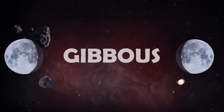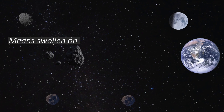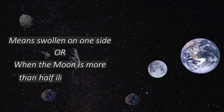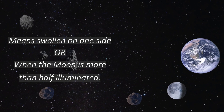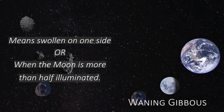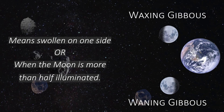Gibbous means swollen on one side, or when the moon is more than half illuminated. This includes Waning Gibbous and Waxing Gibbous phases.